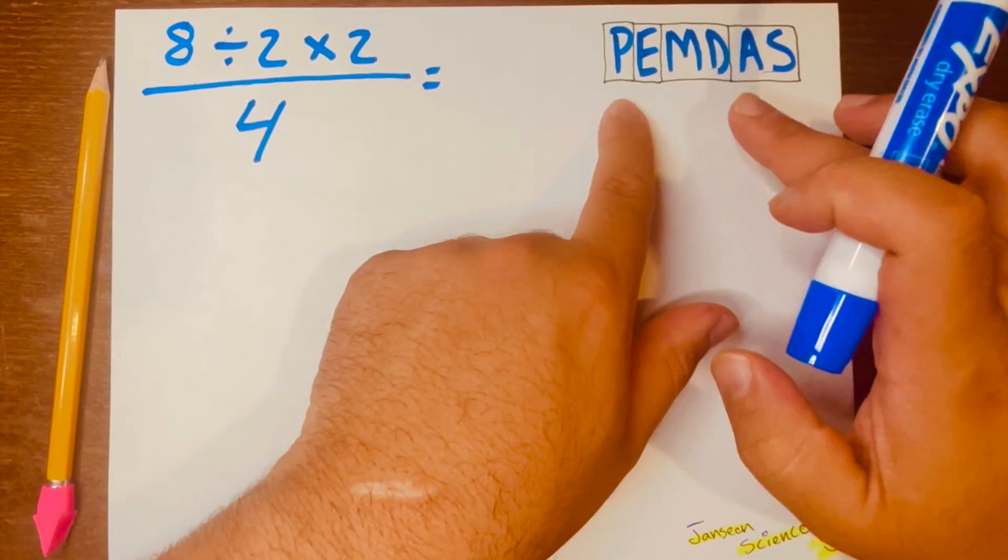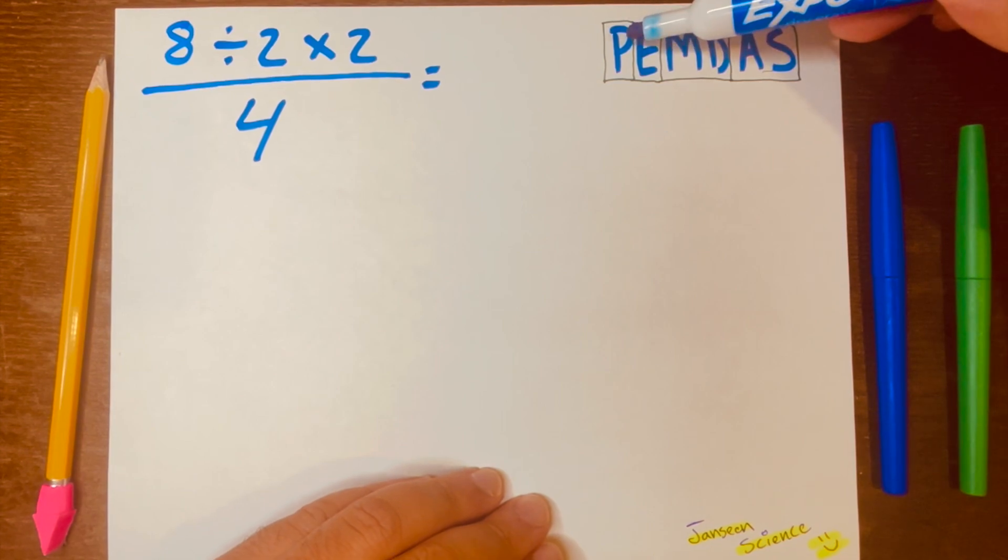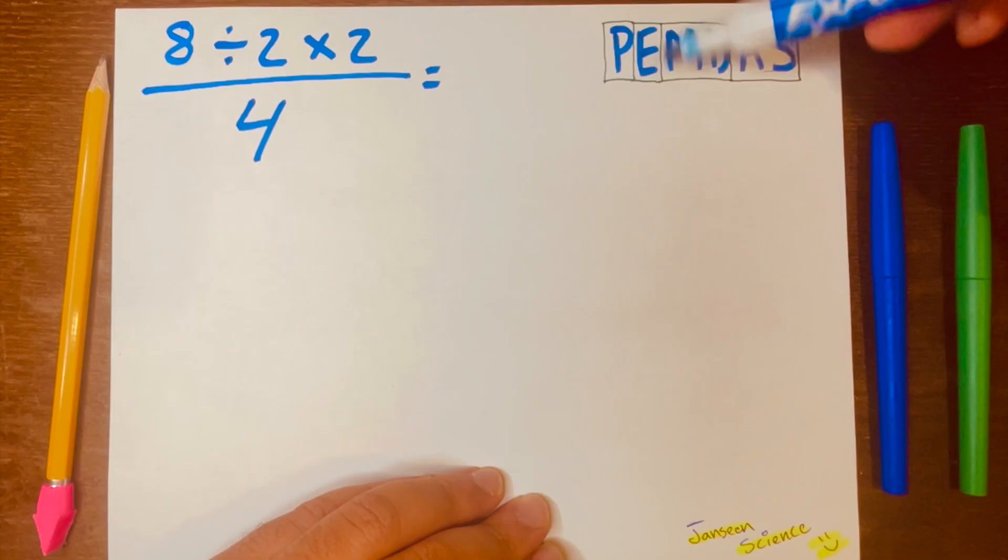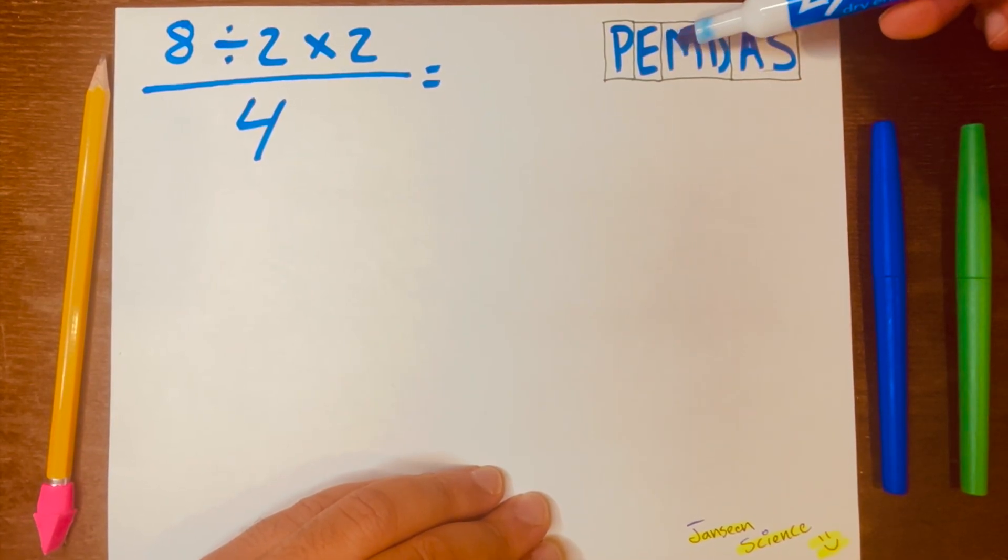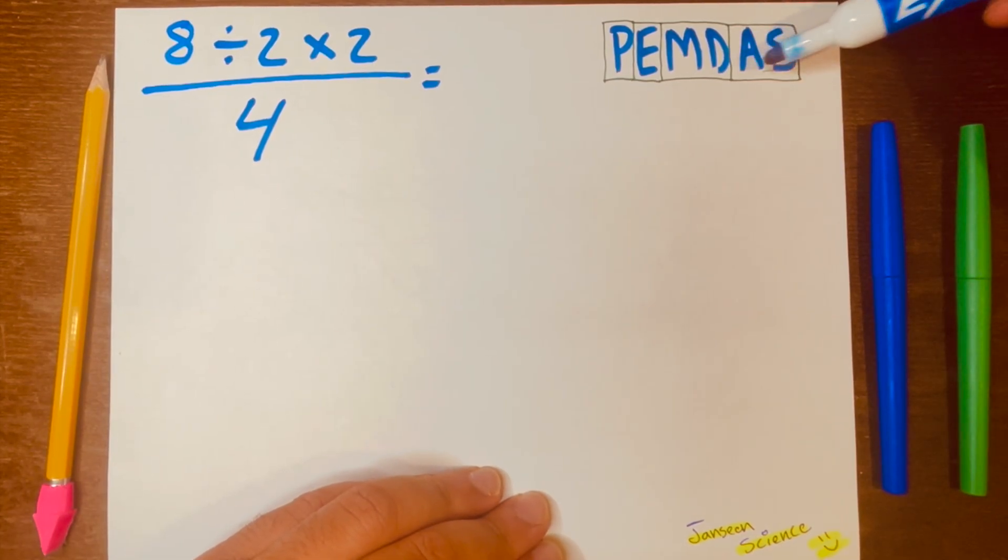PEMDAS has 4 levels. P stands for parentheses, that's 1 level and the highest level. E, exponents, that's the 2nd level. The 3rd level will be MD for multiplying and dividing. And then the last level, the 4th level, is AS, A for addition and S for subtracting.